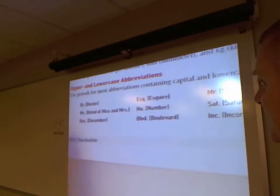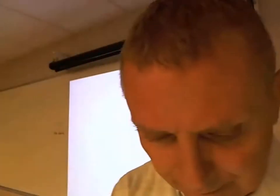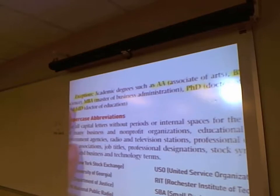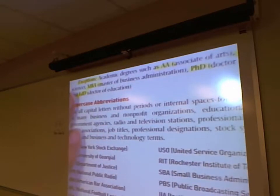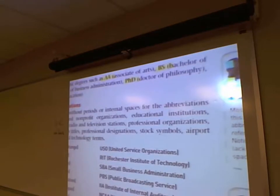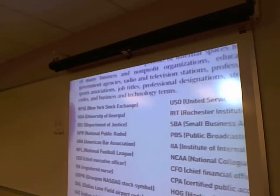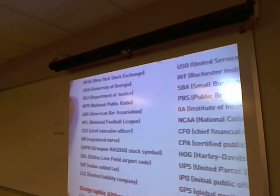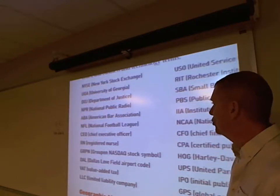Exceptions are your degrees — academic degrees such as Associate in Arts is AA, Bachelor's of Science is BS, Master's of Business Administration is MBA. A Doctorate in Philosophy is capital P, lowercase h, capital D — no internal periods. A Doctorate of Education is Ed.D. Then uppercase abbreviations: the New York Stock Exchange, OU, Department of Justice (DOJ), NCIS, CEO, RN, Dallas Love Field (DAL), Oklahoma City Airport (OKC).